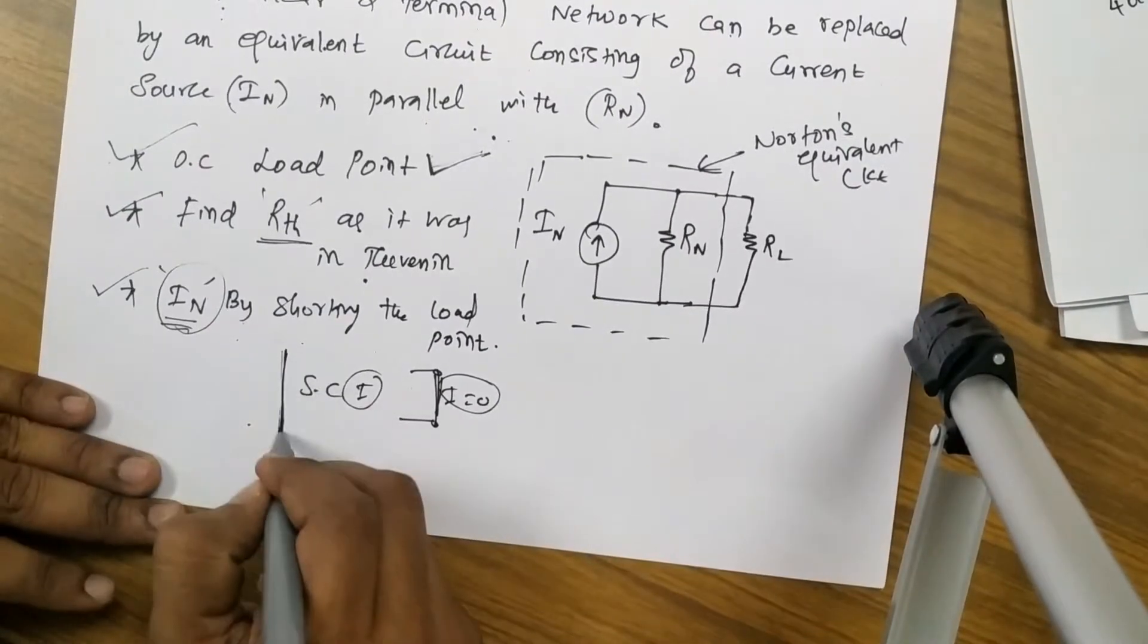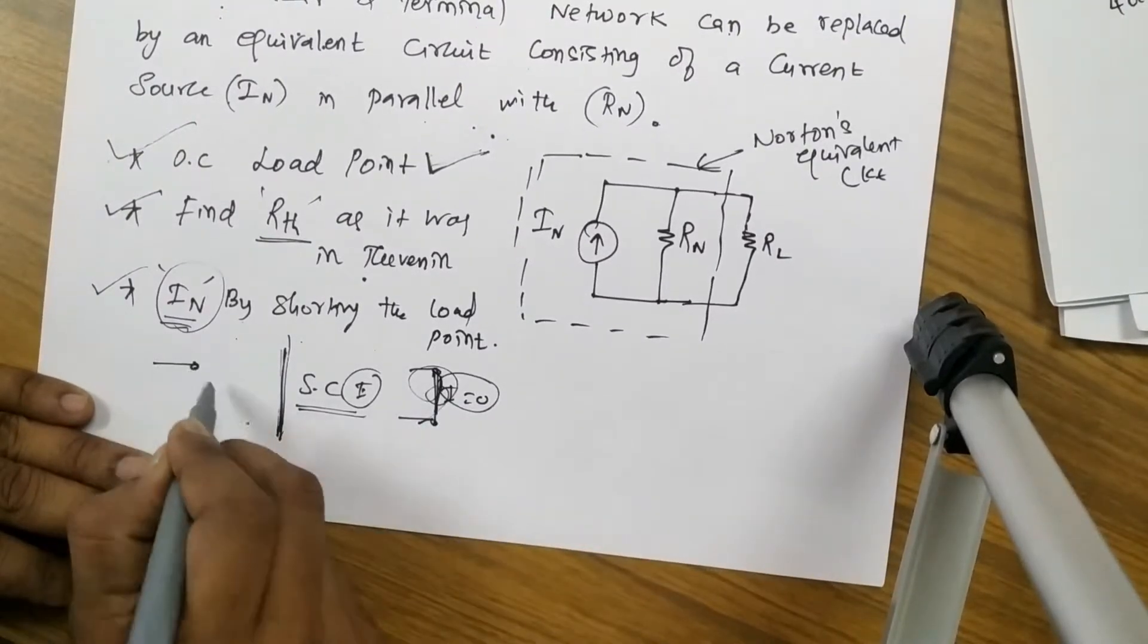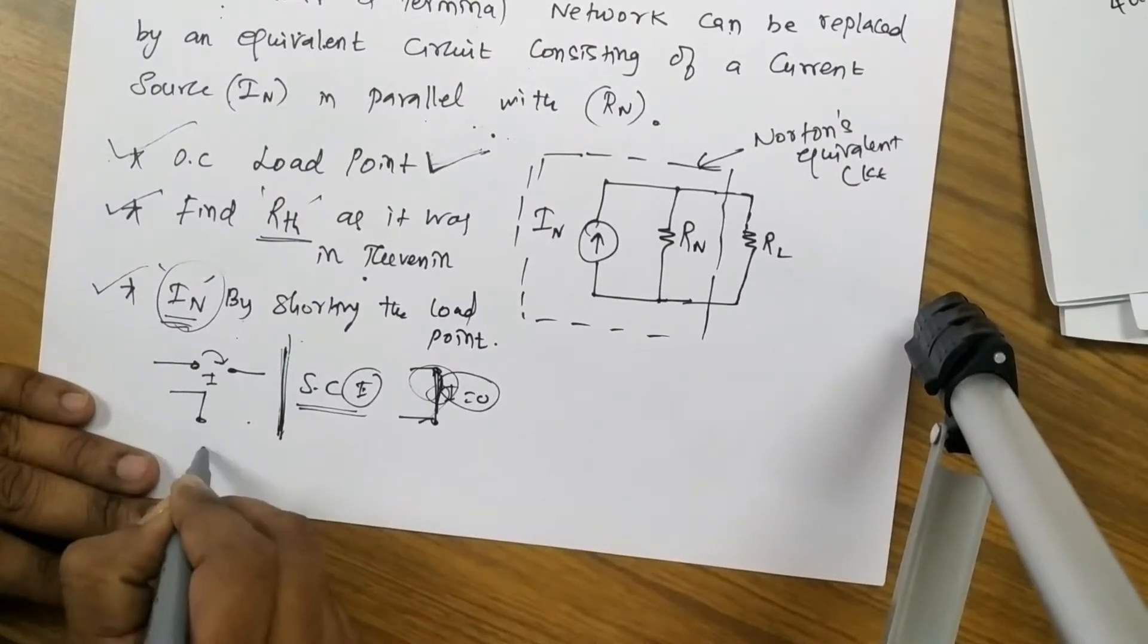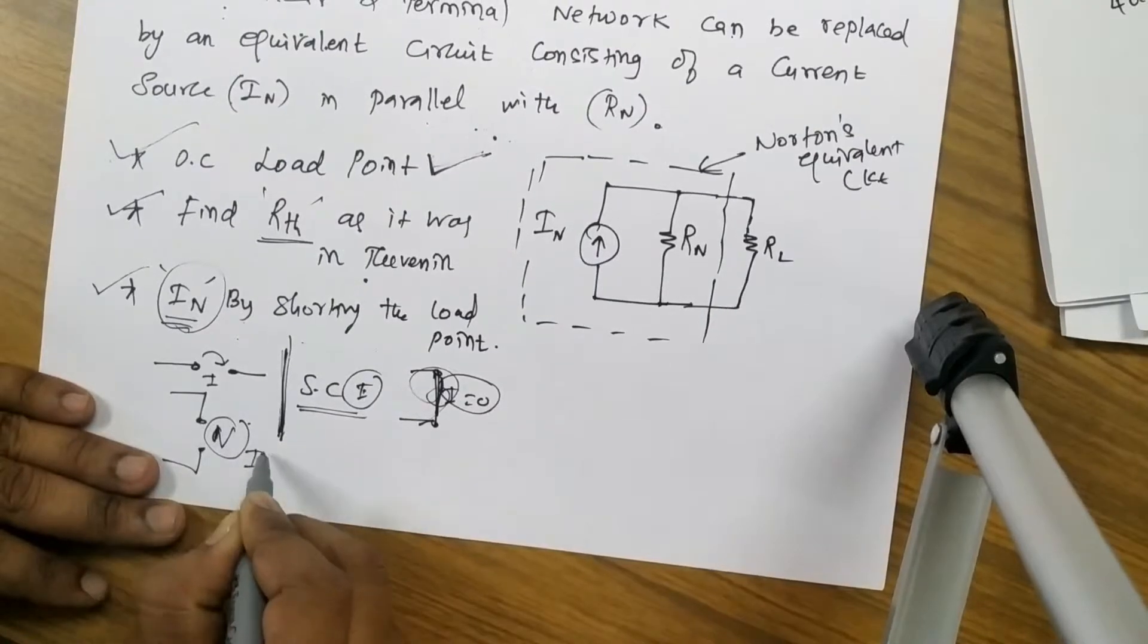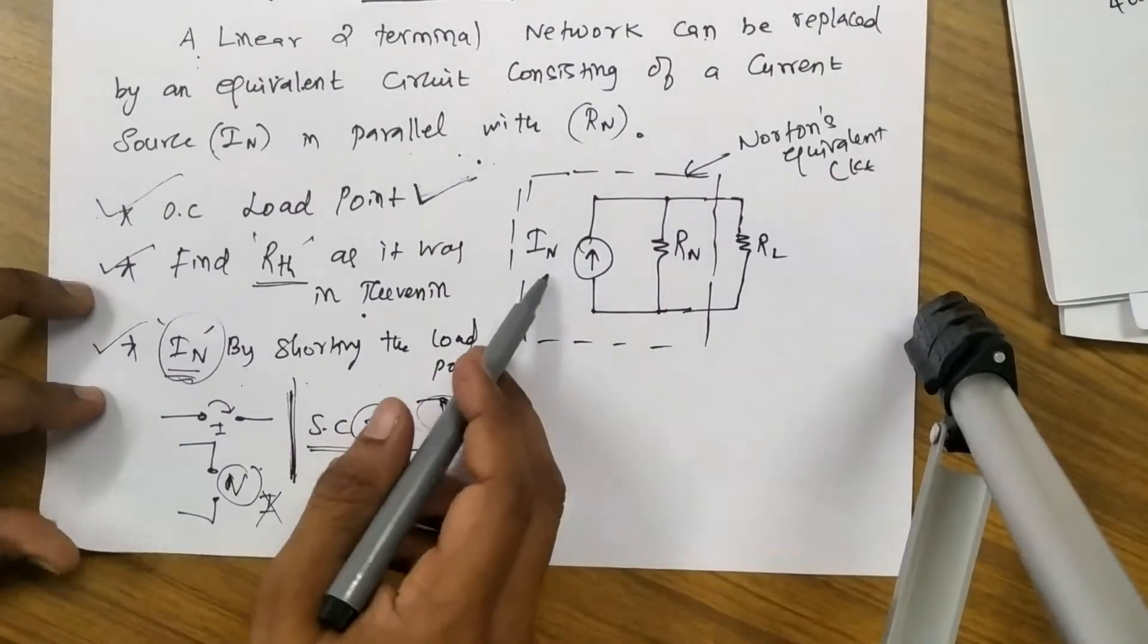And third one is we want to find out In by shorting the load point. Why? Because across the short circuit only we have a current flow, if it is an open circuit there will be no current flow or voltage drop. So we want to short the load point to get the In value. Let us see one simple problem to understand this concept more clearly.